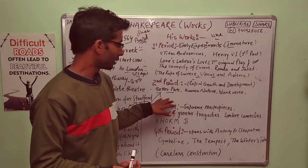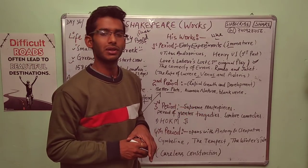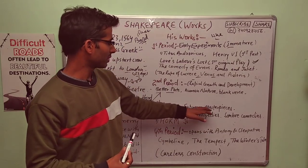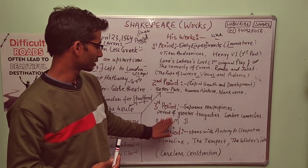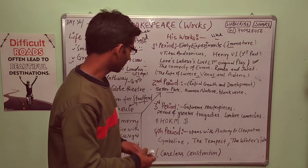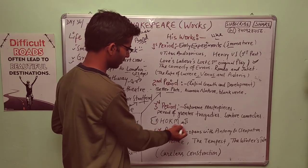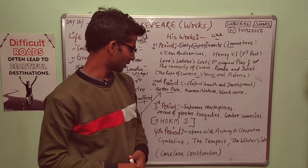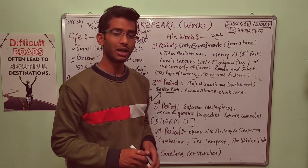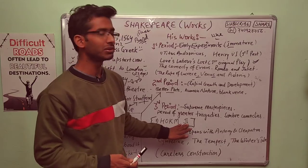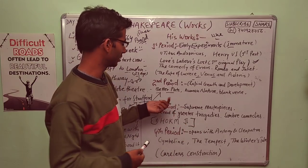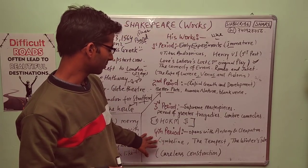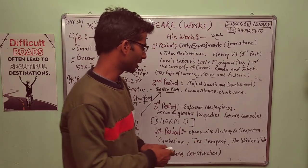Third period: supreme masterpieces. He wrote in this period the great tragedies. Here you can relate HOKAM G: Hamlet, Othello, King Lear, and Macbeth, and Julius Caesar. HOKAM G is the shortcut to remember his tragedies. Sometimes it is asked.